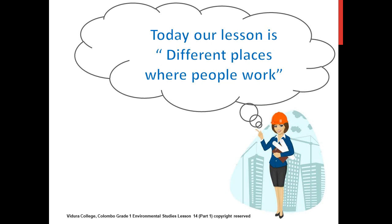That means we need light and eyesight to see everything. Then we learnt about shadow. In the morning, shadow is long. At noon, shadow is short. In the evening, shadow is long again. And to form a shadow, we need light.